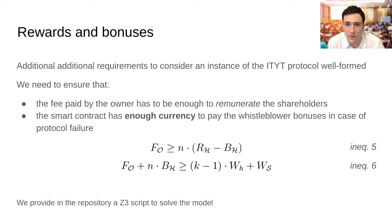There are also some additional requirements that have to be met to consider an instance of the protocol well formed. First, the fee paid by the owner has to be enough to remunerate all the shareholders in case of success. Second, the smart contract has to have enough currency to pay the whistleblower bonuses in case of failure. Please refer to the paper for all the details and have a look in the repository where we provide a Z3 script to solve the model. Now, I leave the spots to Matthew for the presentation of our implementation.